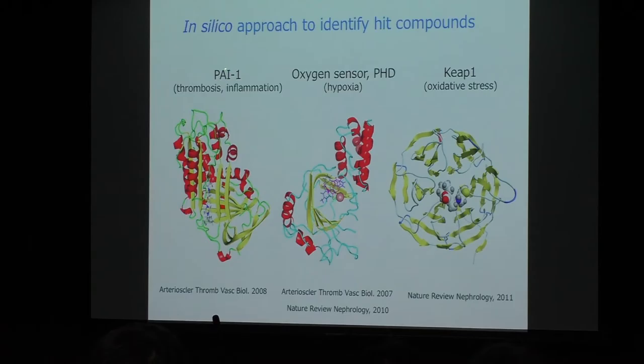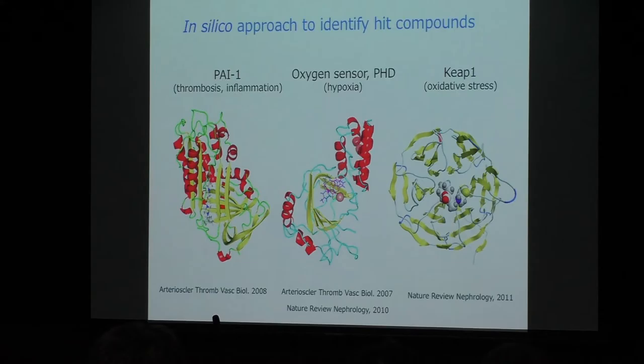These are three drug targets for kidney disease: PAI-1, which I will delineate in detail; oxygen sensor prolyl hydroxylase, which will be briefed by Professor Masaomi Nangaku; and Keap1. If we inhibit the oxygen sensor activity, we potentially promote HIF activity and mitigate hypoxic injury. And if we inhibit Keap1, we can mitigate tissue injury associated with oxidative stress.